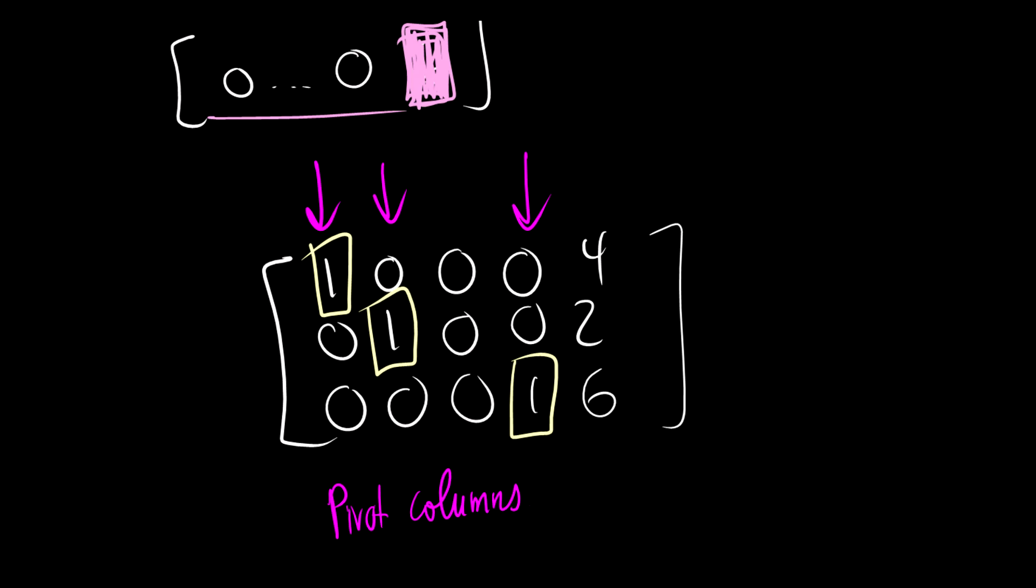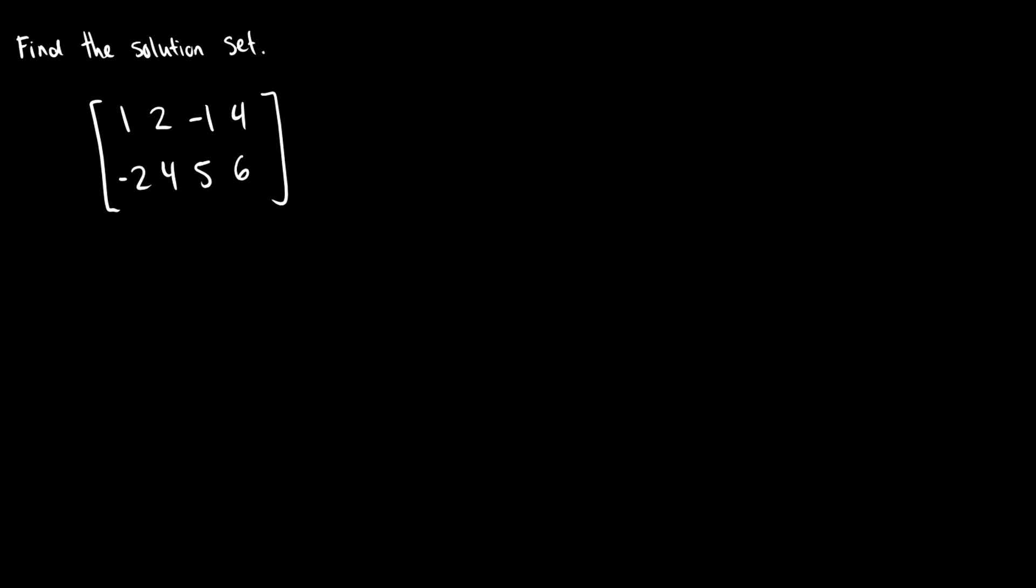So that's what a pivot column is. So that theorem is pretty important for figuring out if your system is inconsistent or not, and you can do it really quickly without actually solving a whole system. So let's find the solution set here. We talked about solution sets, we talked about pivot columns and inconsistent solution sets. So let's see if this is consistent and if it is, what are variables equal to?